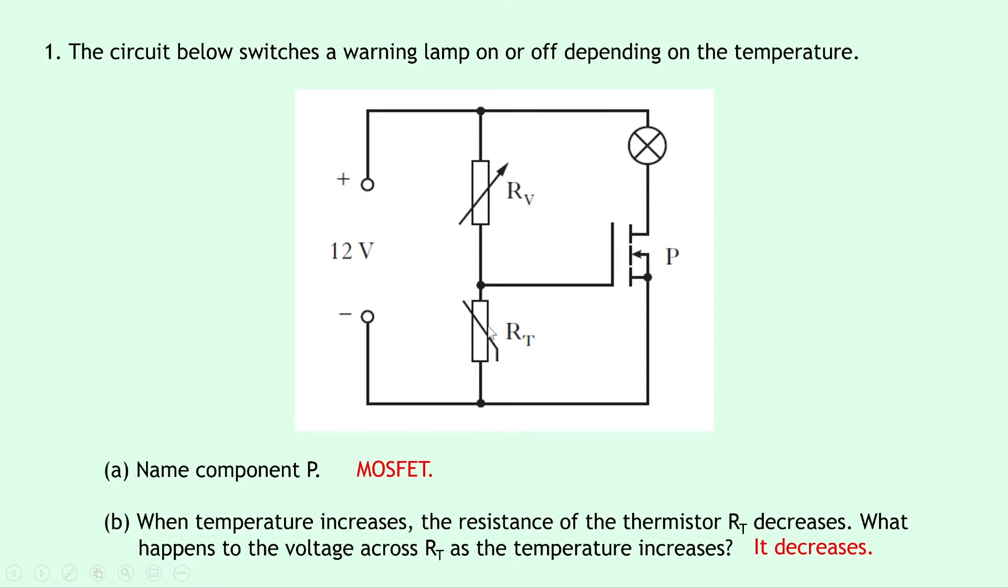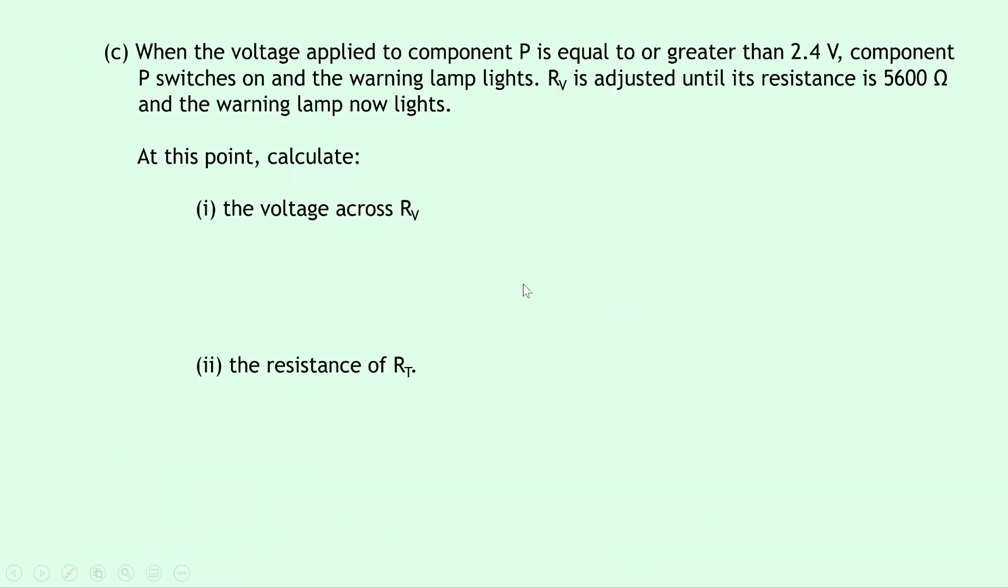So we've got our 12 volt supply and it's saying that when the voltage across the thermistor reaches 2.4 volts, the lamp will now light. So this means we can use our rule for voltage in a series circuit, which says that the voltage across the components there must add up to the voltage of the supply. So if the thermistor has 2.4 volts across it and the supply is 12 volts, then we must be able to do 12 minus 2.4, which will give us the voltage across the variable resistor. So doing that for part one, we can say VV equals VS minus VT, and substituting in our numbers we get 12 minus 2.4, which equals 9.6 volts.